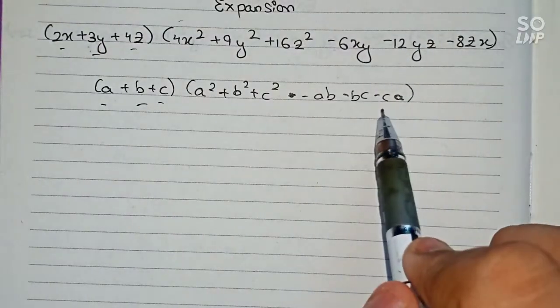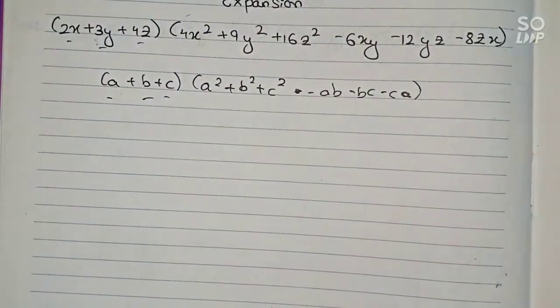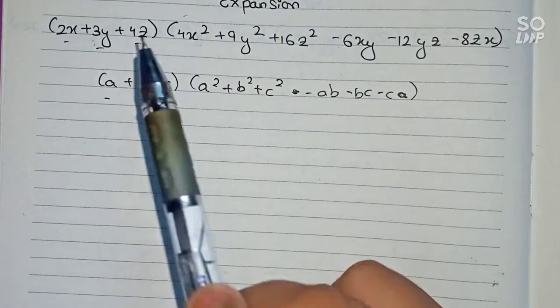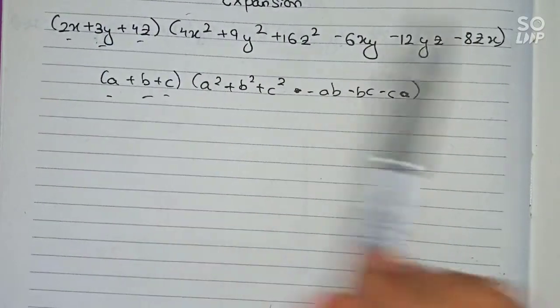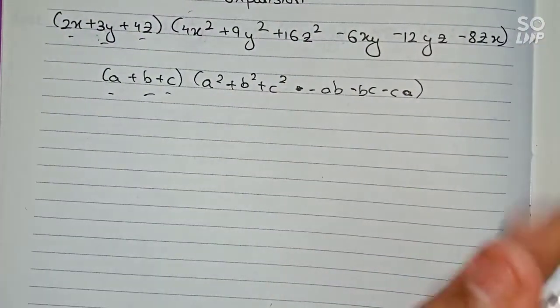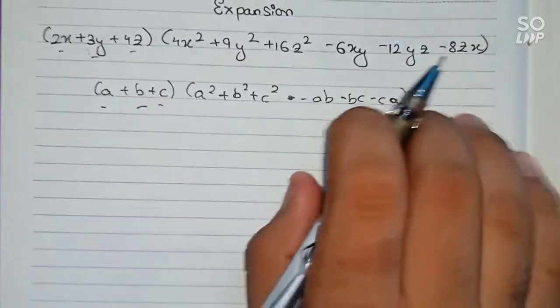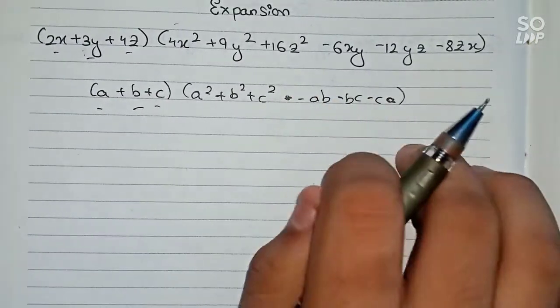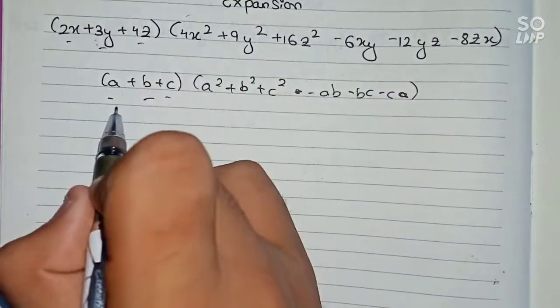So 3×4 is 12, so minus 12yz. And finally, minus ca, that means 2x multiplied by 4z, that means 8zx. So minus 8zx. That means the full question is verified and we can apply this formula.